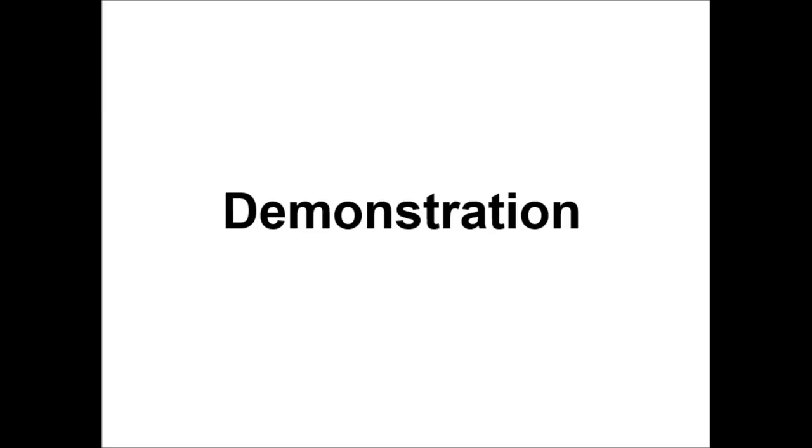Before we jump into how to analyse a chest x-ray, I'm going to talk you through how I would present a normal one to a colleague. This is an ideal scenario where we assume we have the patient's information and know what kind of radiograph it is. This is an upright PA film of Mr. Duffy, taken on the 1st of January this year. Exposure is adequate, the patient is not rotated and there is no motion blurring.